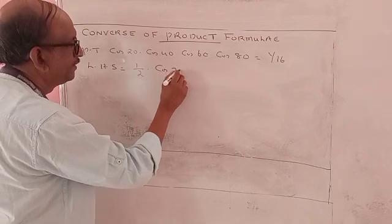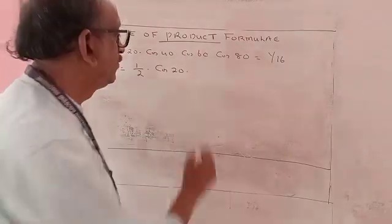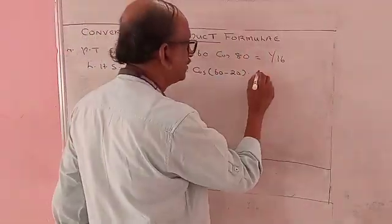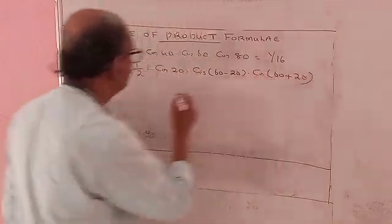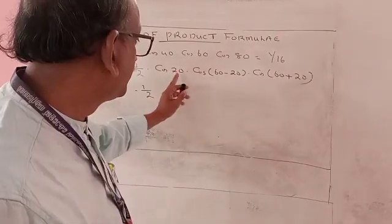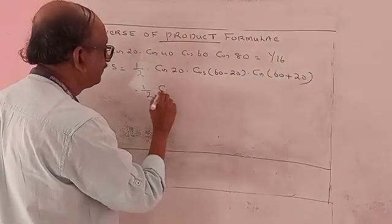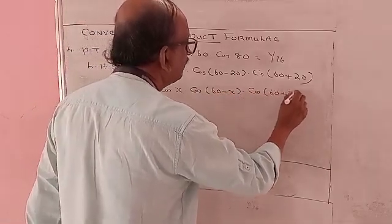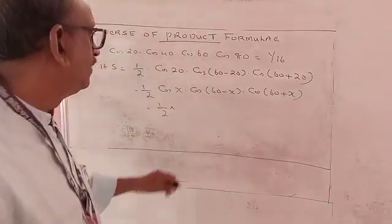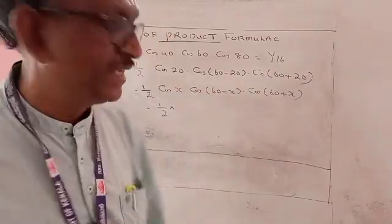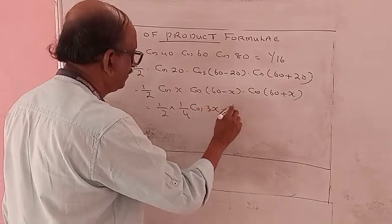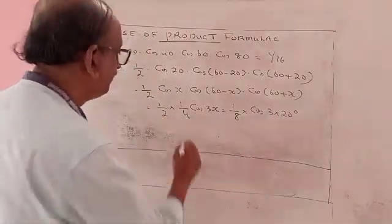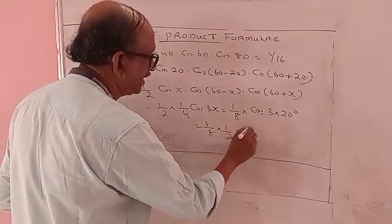Continuing: cos 20° · cos 40° · cos 80°. Here 40° = cos(60°-20°) and 80° = cos(60°+20°). Replacing 20° by x, we get cos x · cos(60°-x) · cos(60°+x). Using formula 4, this equals 1/4 cos 3x. With x = 20°, this gives 1/4 · cos 60°. cos 60° = 1/2, so the answer equals 1/8.